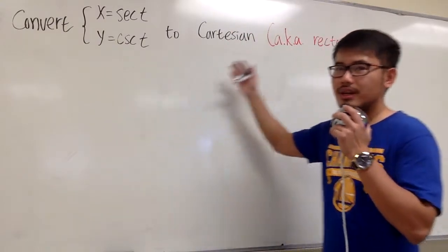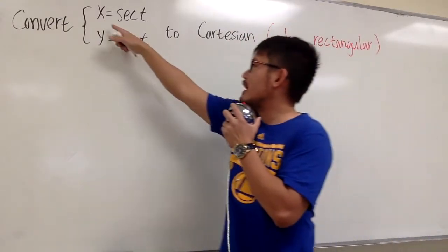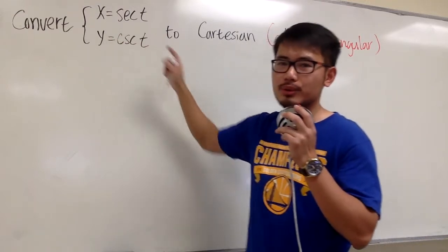We are going to convert this parametric equation to Cartesian. Here we have x is equal to secant t, and then y is equal to cosecant t.